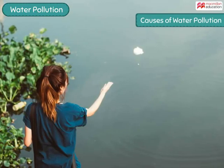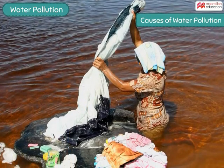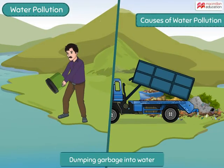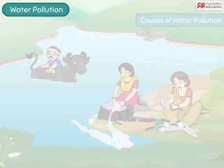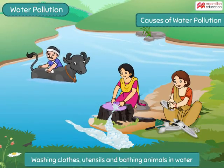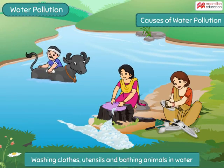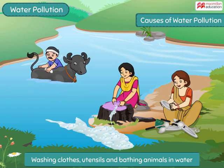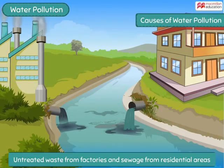Many human and natural activities result in water pollution. Dumping garbage into water bodies is a common cause. Washing clothes, utensils, and bathing animals add dirt and detergents to the water and cause pollution. Untreated waste from factories and sewage